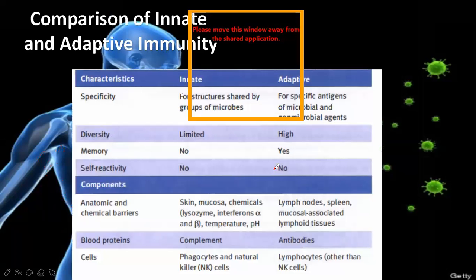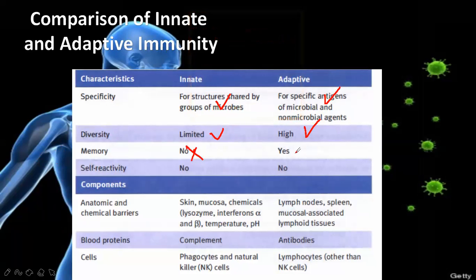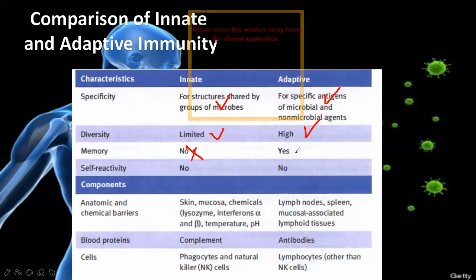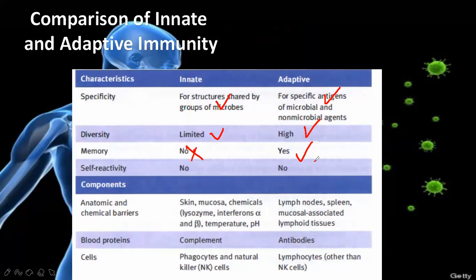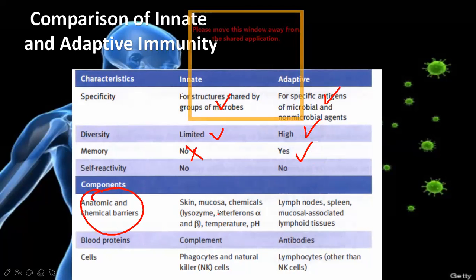In comparison, innate immunity is not very specific and has limited diversity — no memory. Adaptive immunity is very specific, has too much diversity, and has memory. If you come again and again, it can memorize. For example, if you have a hepatitis vaccination, antibodies are in your body — if that hepatitis virus enters, no disease because you already have antibody. That is the memory.